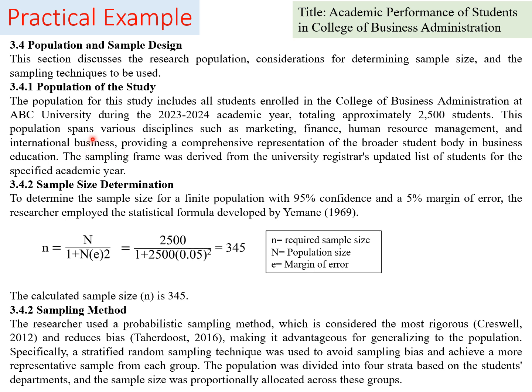This population spans various disciplines such as marketing, finance, human resource management, and international business, providing a comprehensive representation of students in business education. The sampling frame will be derived from the University Registrar — an updated list of students for that specific academic year, cleared of duplicates and missing entries.